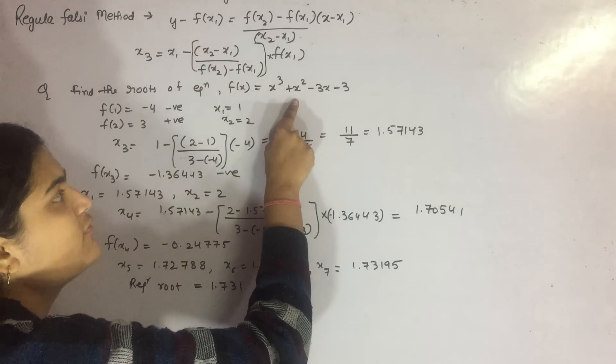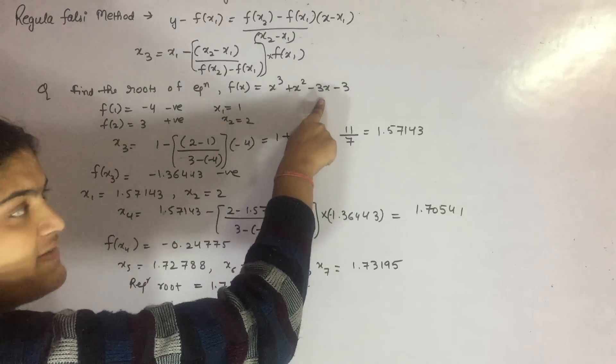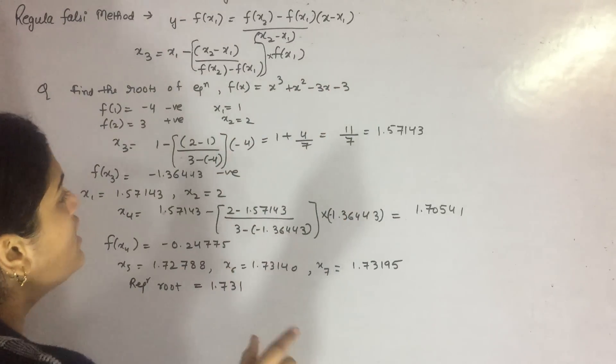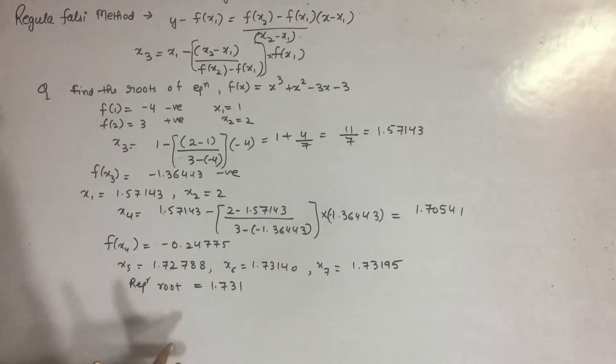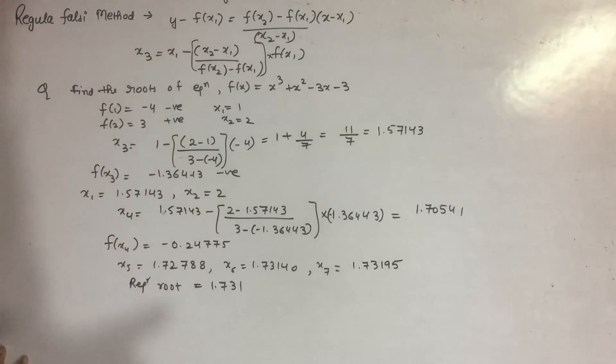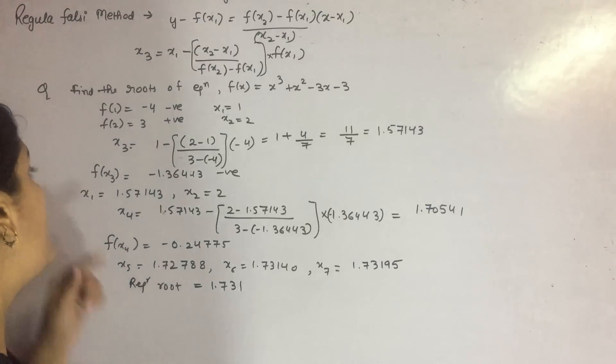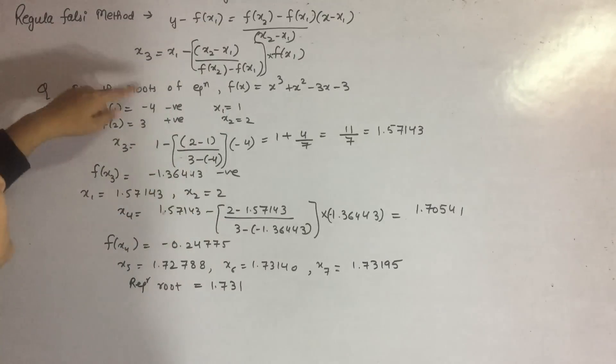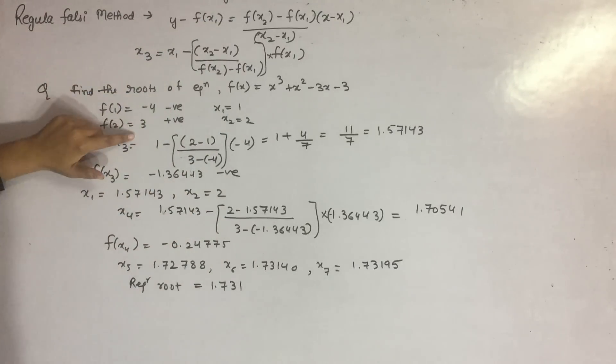...minus 3 times 1.57143 minus 3. By substituting all these values and calculating, you will find that f(x3) is negative. So again, you have to take two values for which the function has one negative and one positive value. Your f(x3) is negative, and your positive value is f(2), which is 3.